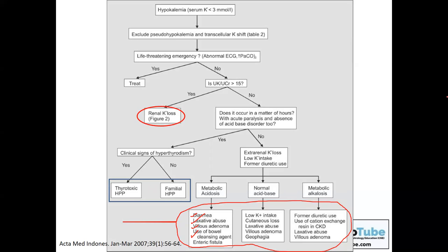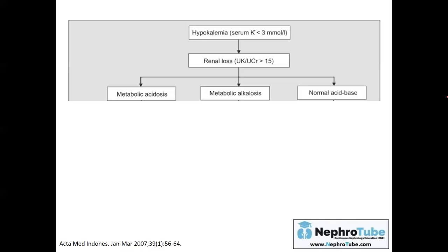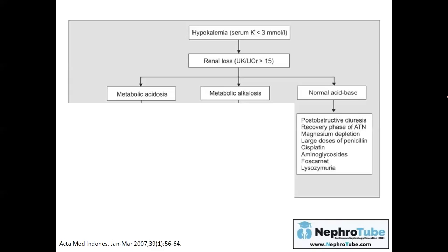If there is renal potassium loss, check the acid-base status: is there metabolic acidosis, metabolic alkalosis, or normal acid-base balance? If the acid-base is normal, hypokalemia may be due to post-obstructive diuresis or the recovery phase of ATN. Again, most of these causes will be clear from the start and you will not usually need to go through the full approach.